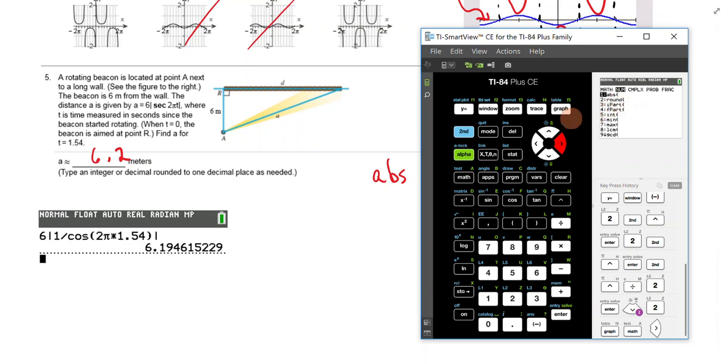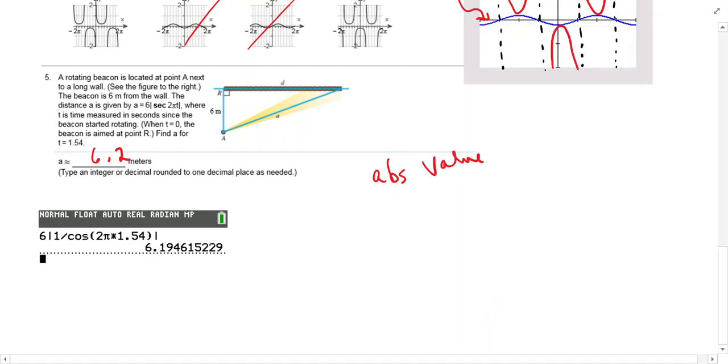So six, absolute value of one divided by cosine of 2 pi times 1.54. And you got 6.19. It says round to one decimal place. So we've got 6.2. So hopefully that will get you through graphing secant and cosecant.